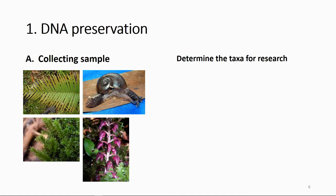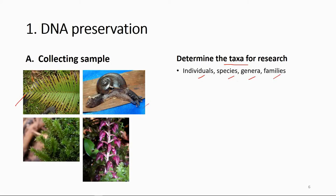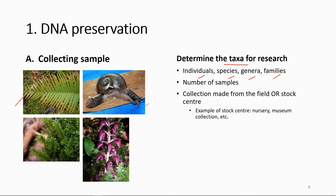The sample usually refers to the organism — it can be plant or animal. First, determine the taxa for the research: which species, family, or genus you want to study. Your research unit can be at the individual, species, genus, or family level, and you also have to decide how many samples to collect. Samples can come from the field or from stock sources such as a nursery or museum collection, if the samples and their location information are available.